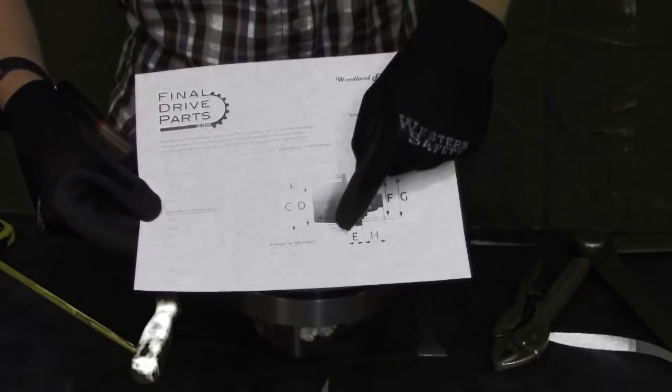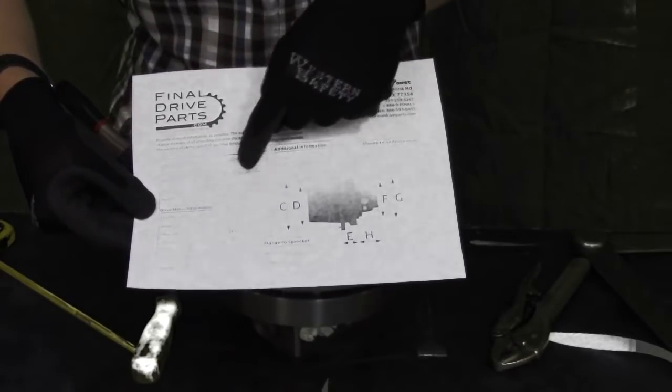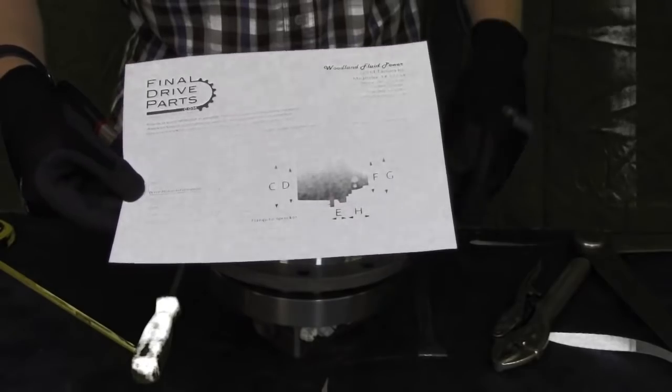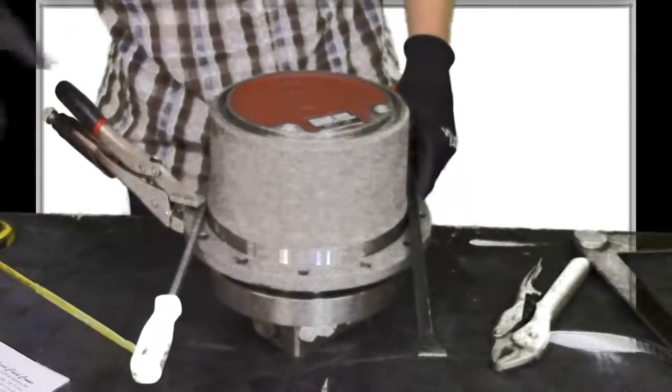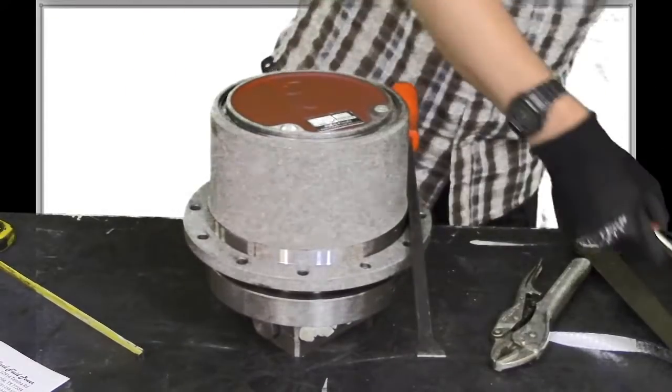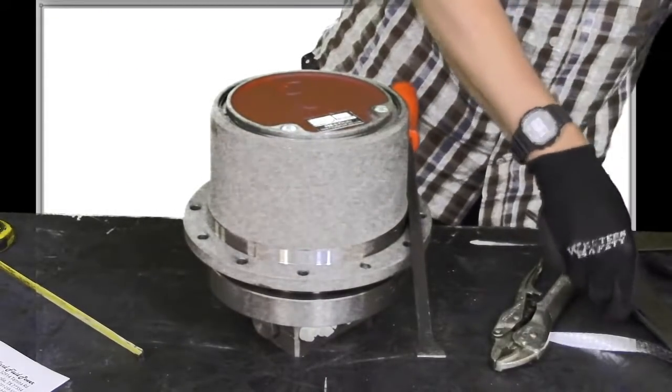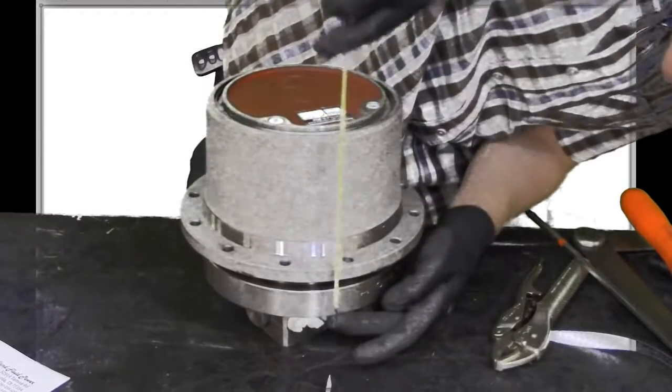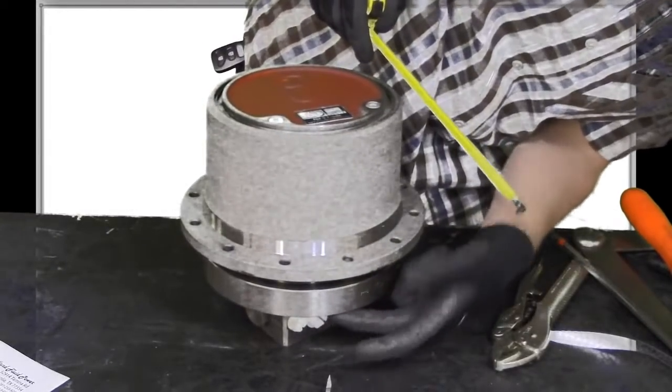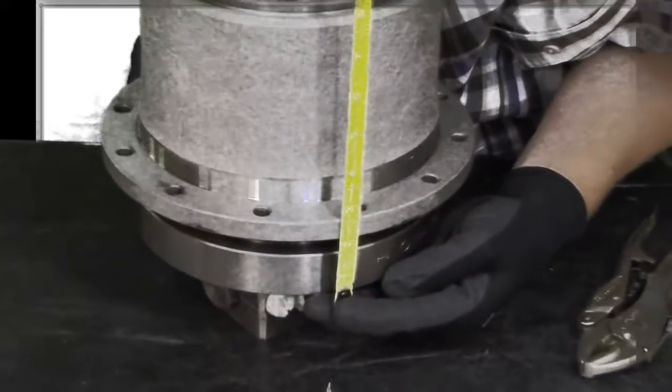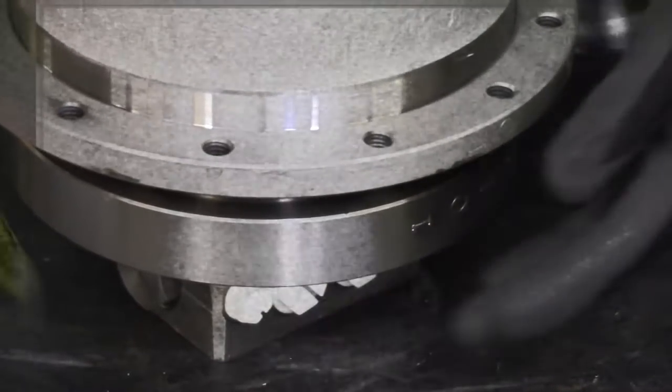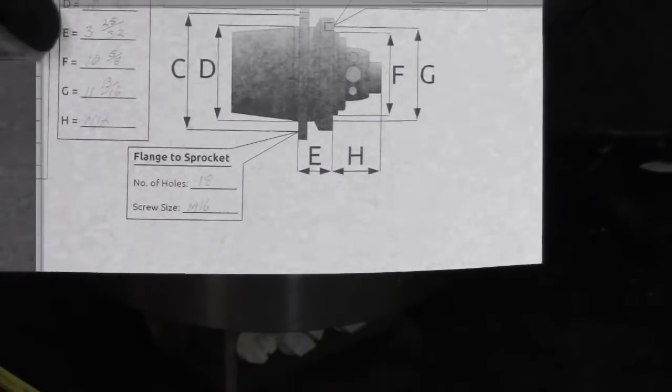The first measurement we took, which was the bolt circle on the sprocket side of the drive, was measurement C. And I got nine and a quarter there. So nine and a quarter for C. I got eight and an eighth for D. And then I'm going to check the offset now. So to measure this offset, I just want to go from the outside of this bottom flange to the outside of the top flange here. And I'm showing two and three quarter inches there. So that would be item E, the outside of the outside of the flanges, two and three quarter.